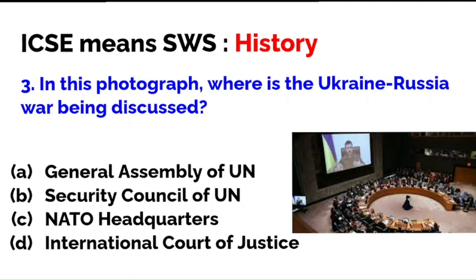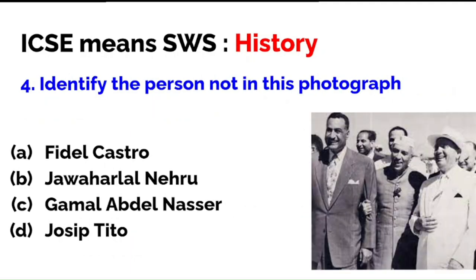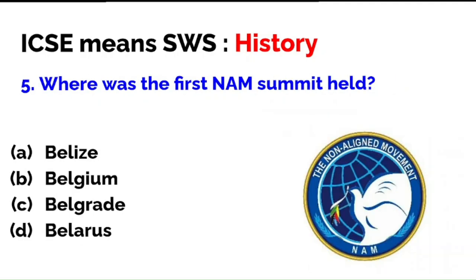Identify the person who is not in this photograph. Is it Fidel Castro, Nehru, Nasser, or Tito? The person on the extreme right is Tito, Jawaharlal Nehru is in the middle, and Nasser of Egypt is on the left. The correct answer — the person who is not in this photograph — is Fidel Castro of Cuba. Whichever question has a 'not', please pay more attention and read carefully.